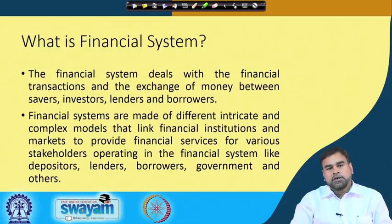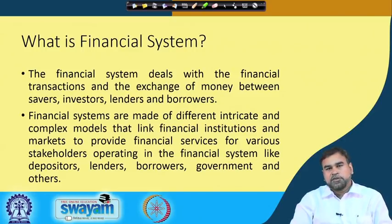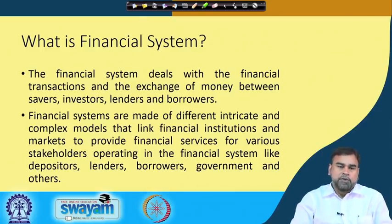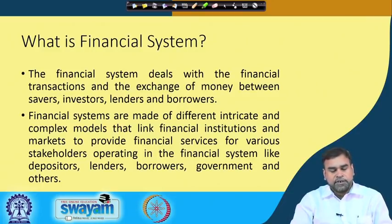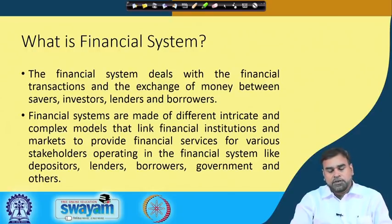In general, the basic job of the financial system is to provide financial services — that is, to provide certain kinds of services to different stakeholders to maximize their return or to fulfill their financial requirements. Therefore, we can define it this way: financial systems are made of different intricate and complex models that link financial institutions and markets to provide financial services for various stakeholders operating in the financial system, like depositors, lenders, borrowers, government, and others.